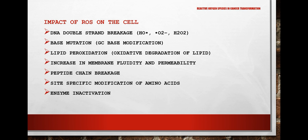Regarding the impact of ROS on the cell: ROS causes DNA double-strand breakage, with a major role played by hydroxyl radicals, superoxide radicals, and hydrogen peroxide. ROS also causes base mutations, specifically modification of GC bases, while AT bases are less susceptible to ROS.